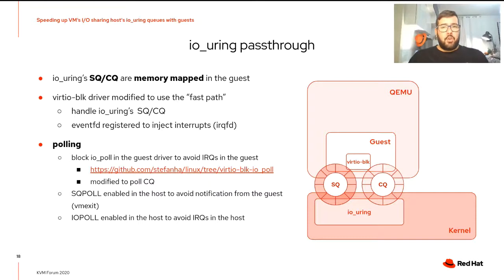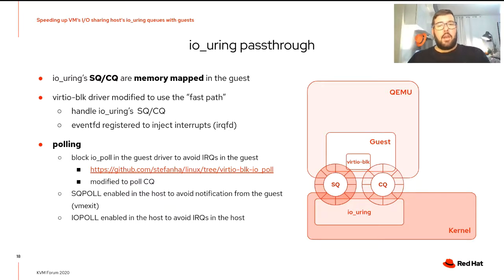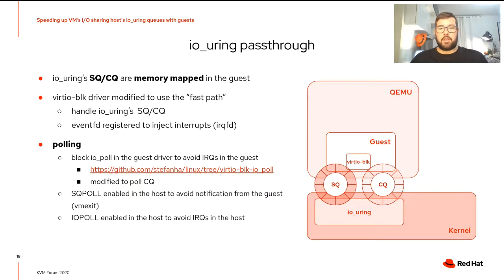To realize IOUring pass-through, the submission and completion queues are mapped in the guest memory, and we modify the VirtIO block driver to use this new short path instead of VirtQs. It will submit and reap requests directly from the SQ and CQ rings. We used a registered eventfd in IOUring to inject interrupts in the guest when there are new CQEs available. We also implemented a polling strategy where we disable these notifications.